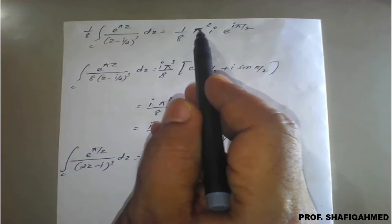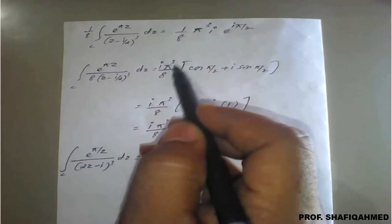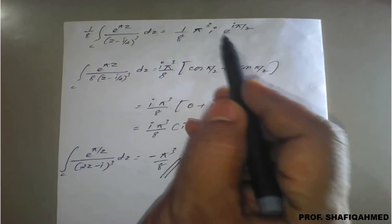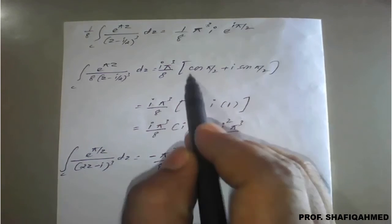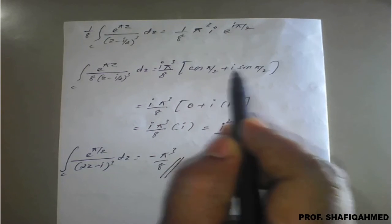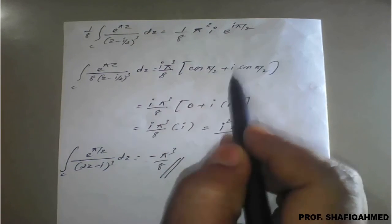You club it - pi cube upon 8 - and you apply e raised to i times pi by 2 can be written as cos pi by 2 plus i times sin pi by 2 using the complex result.